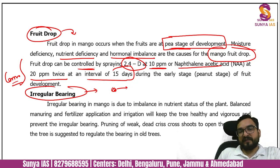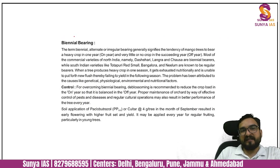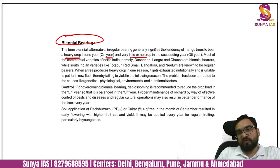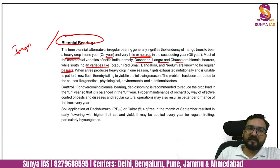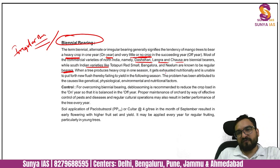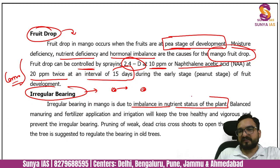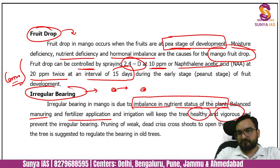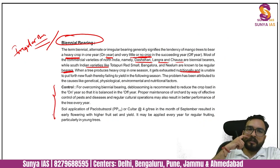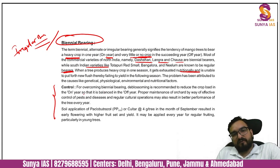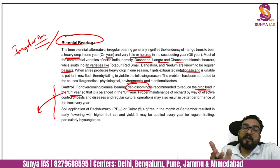Irregular bearing, also known as biennial bearing, is another problem — one year heavy crop, next year little or no fruit. This problem is seen in Dasheri, Langda, and Chaunsa varieties, whereas South Indian varieties are regular bearers. Biennial bearing happens because of nutritional unavailability and imbalance in nutrient status. Balanced fertilizer application is needed to keep the tree healthy and vigorous. De-blossoming is recommended to reduce crop load in the 'on year' when heavy fruiting is expected.